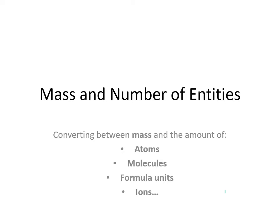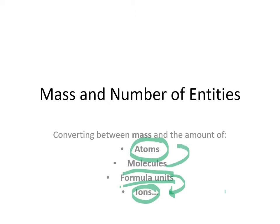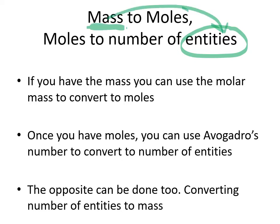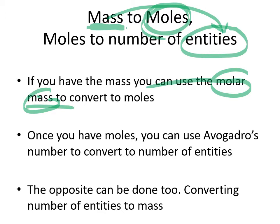Starting with the mass of a substance, we can find out how many particles of one sort or another are in there. We could convert down to atoms, stop at molecules, or at an ionic formula unit — and we could find the number of a particular type of ion or how many atoms are in a molecule. To find the amount of entities within a substance, you start with mass, convert to moles using molar mass, then use Avogadro's number.